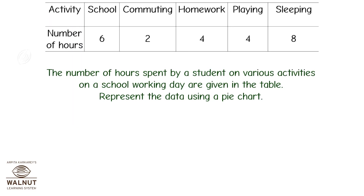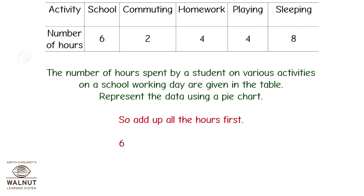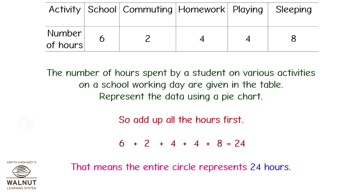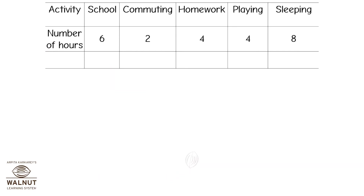Once you know all this, drawing a pie chart shouldn't be too tough. The number of hours spent by a student on various activities on a school working day are given in a table — represent the data using a pie chart. Add up all the hours first: 6 plus 2 plus 4 plus 4 plus 8 is equal to 24 hours. The entire circle represents 24 hours. School is 6 hours out of 24, so what angle out of 360 will it be?